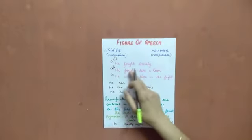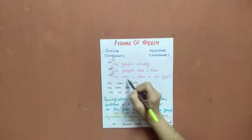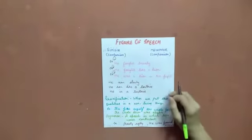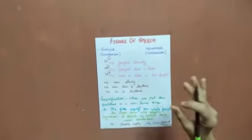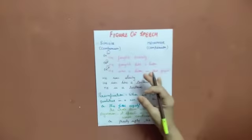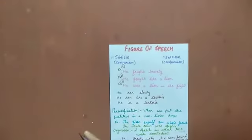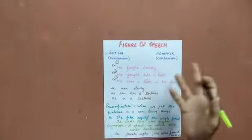Example number two, he fought like a lion. Example number three, he was a lion in the fight. All the three sentences denoting the same fight and the same person. But what is the comparison? What is different? He fought bravely. Simple sentence, very ordinary language.